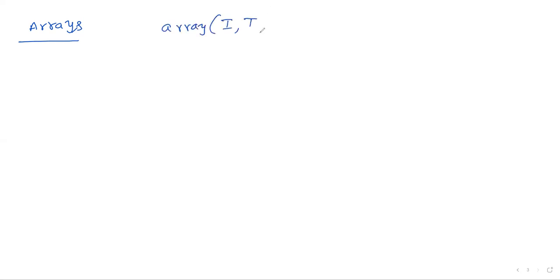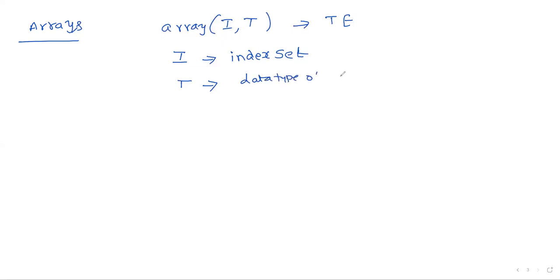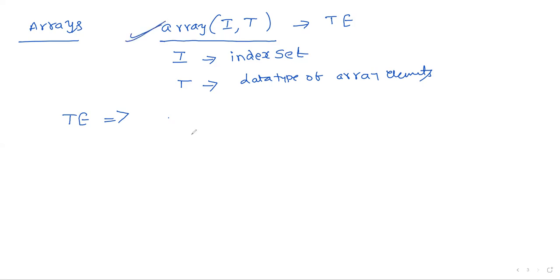For arrays, the type expression is represented as array(i, t), where i is the index set — that is, the indexes of the array — and t specifies the data type of the array elements. For example, consider an integer array of 20 elements. The type expression is represented as array(0,1,2,...,19, int), meaning we have 20 elements starting from 0, all of type int. This is the type expression format for an array.